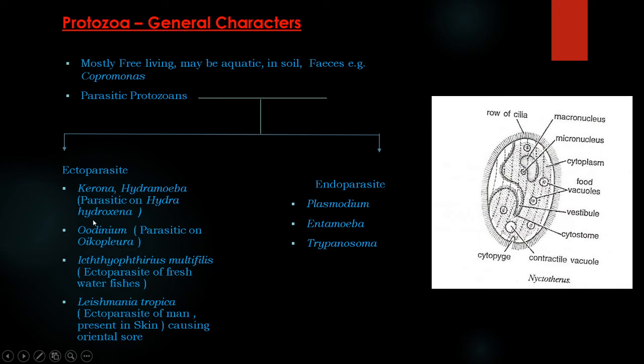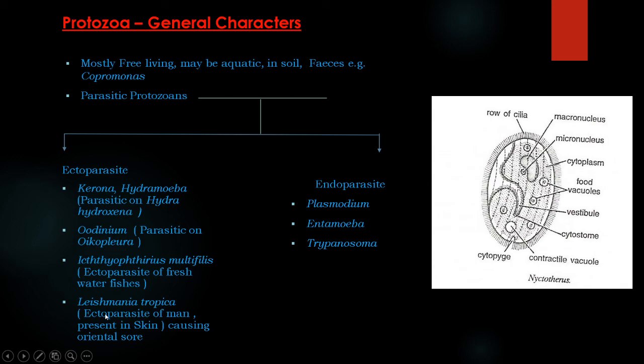Ectoparasites include Kerona and Hydroamoeba, which are parasitic on Hydra. Oodinium is parasitic on Oikopleura, which is a protochordate. Oodinium is also an ectoparasite of freshwater fish. Leishmania is an ectoparasite of man, found in the skin, and causes oriental sore. Endoparasites, which occur inside the body of the host, include Plasmodium, Amoeba, Trypanosoma, etc. This is all about the general characters of Protozoa.